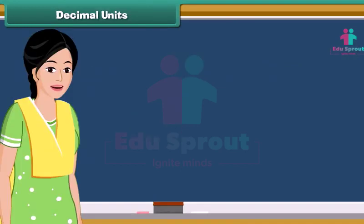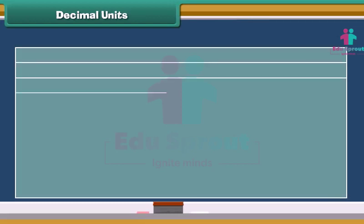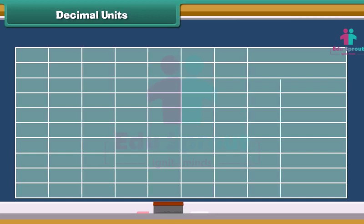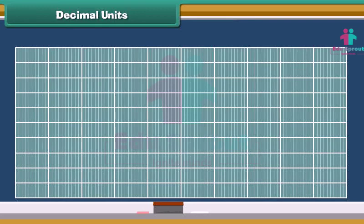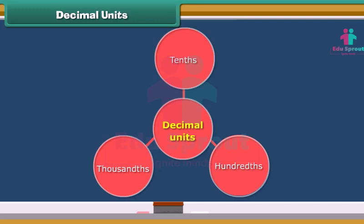To understand decimals, we need to learn about place value first. Imagine we have a rectangle that represents one whole object. If we divide it into 10 equal size rectangles, we will have 10 parts of 1, or we can say 10ths. If we divide those rectangles into 10 smaller rectangles, then we have 10 times 10, or 100 parts of 1 — that is 100ths. Dividing those rectangles into 10 smaller rectangles, we have 10 times 100, or 1000 parts of 1 — that is 1000ths. So the fractions 10ths, 100ths, and 1000ths are called decimal units.